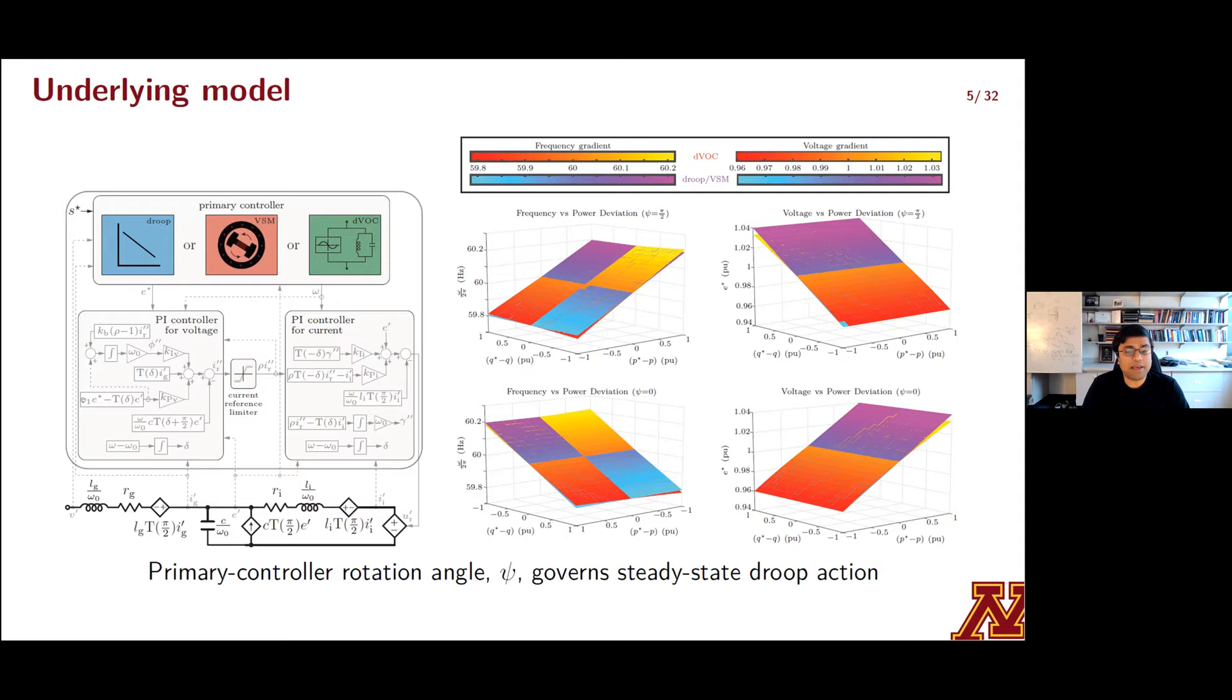There's classical droop control, which is courtesy Mukul Chandorkar and Deepak Devan from a celebrated 93 paper. There's virtual synchronous machine control. This has an origin story that's a bit harder to nail down. And then there's virtual oscillator control, which is a relatively newer entrant, merely an academic fascination at its inception but now has captivated a little bit of attention across the community because of the rich dynamics that it offers.